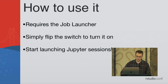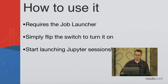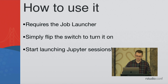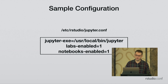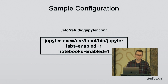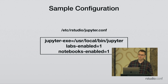To set this up, you need the job launcher — there's plenty of documentation online for that. Once that's enabled, all you have to do to turn on Jupyter sessions is flip some switches and set a binary path. A sample configuration file just sets the binary path for Jupyter, then enables Jupyter Labs for the JupyterLab interface, or notebooks for the Jupyter Notebook interface — and you can have both at the same time.